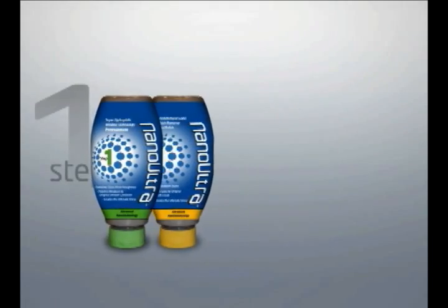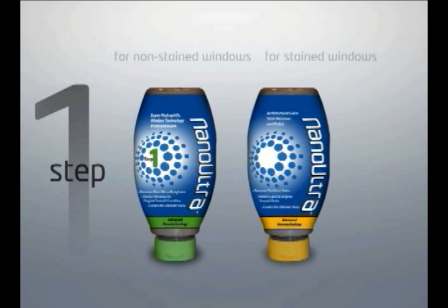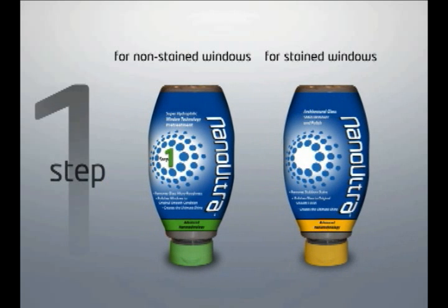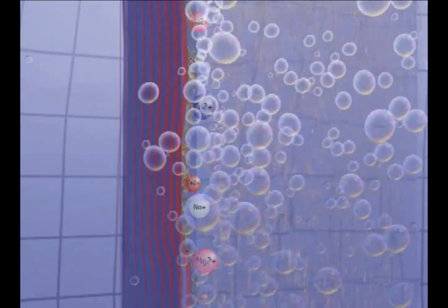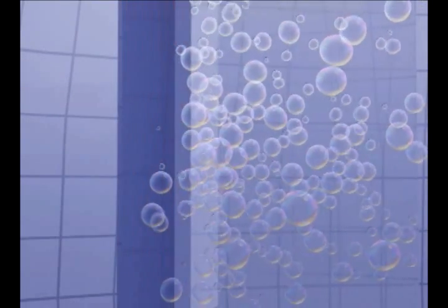First, using the Nano Ultra Superhydrophilic Pre-Treatment for non-stained windows or the Nano Ultra Stain Remover and Polish for stained windows, the glass surface can be restored back to its original condition, free from defects and buildup.